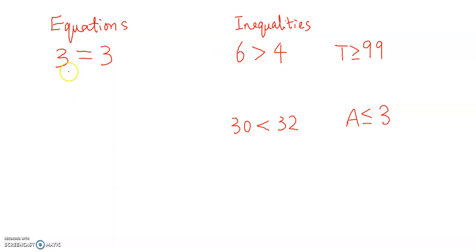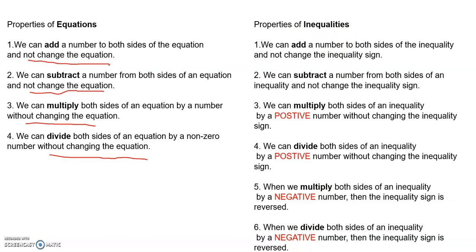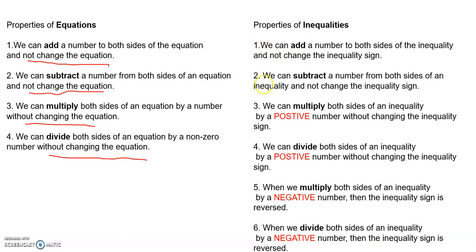For an equation, we can add, subtract, multiply, or divide the same number from both sides without changing the equation. But do these properties still hold for inequalities? Some of them do, but not all of them. Let's look at the properties of inequalities. The first two — when we add or subtract a number to or from both sides of an inequality — it's not going to change the inequality sign.